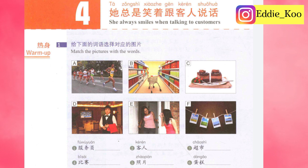Now let's match the pictures with the correct words. Picture A — 比赛. Picture B — 超市. Picture C — 蛋糕. Picture D — 服务员. Picture E — 客人. Picture F — 照片.